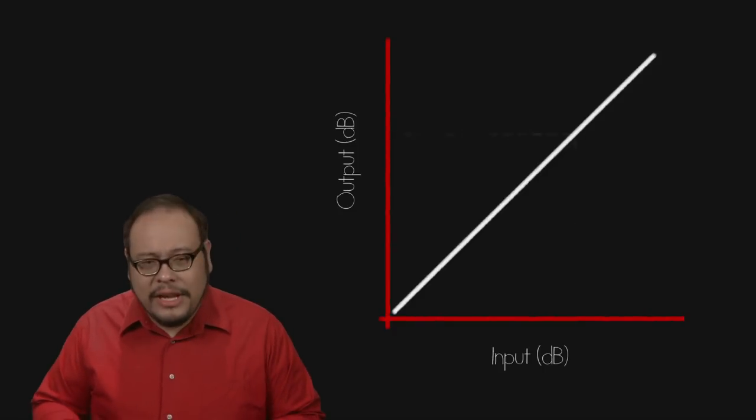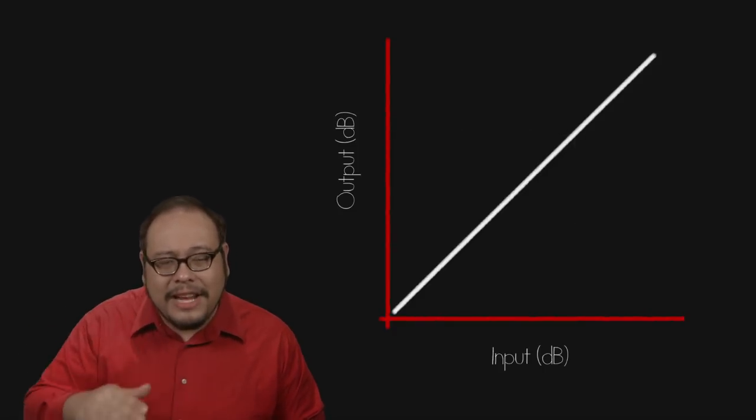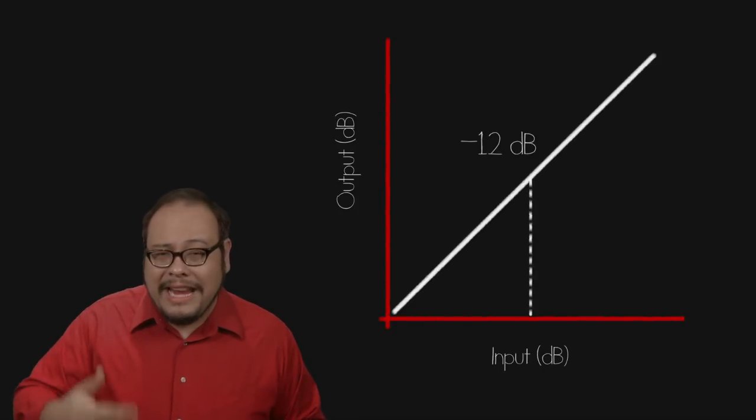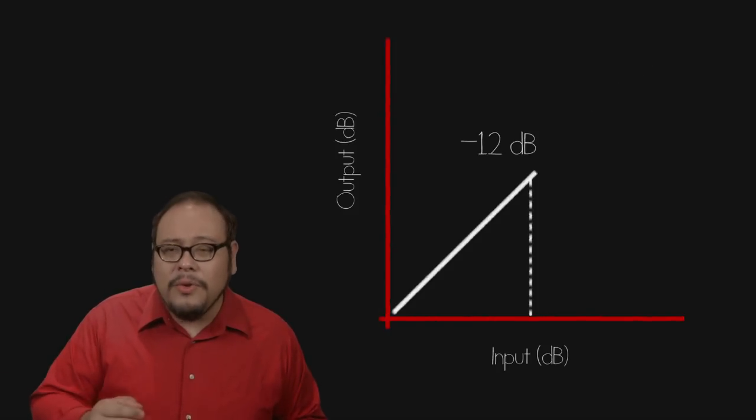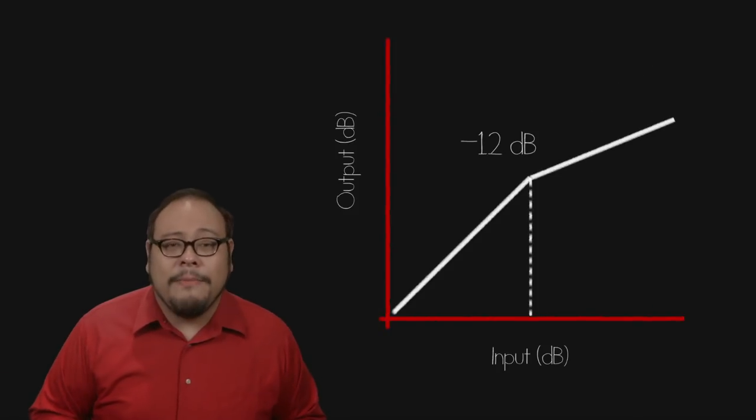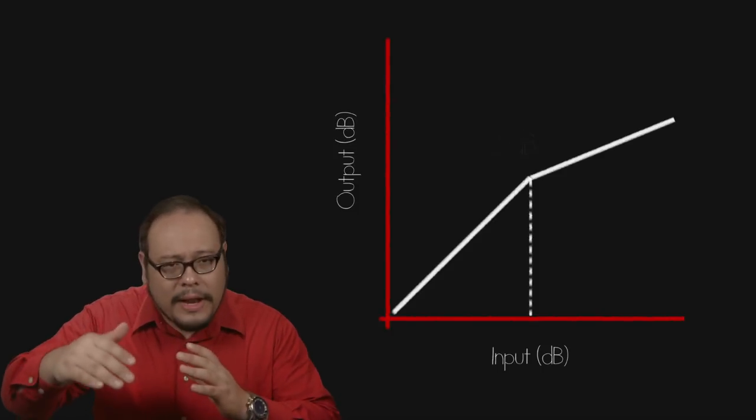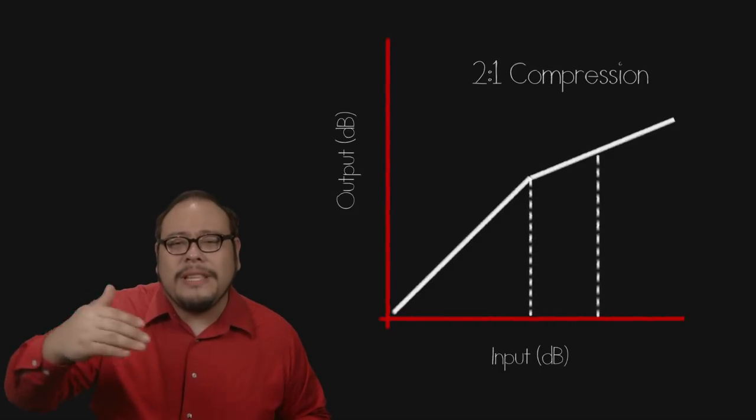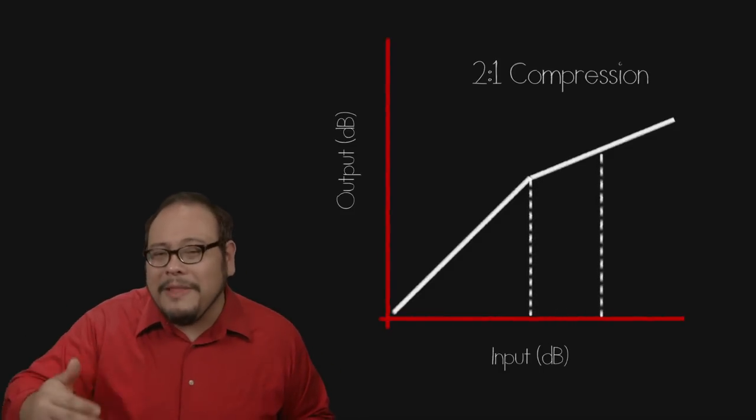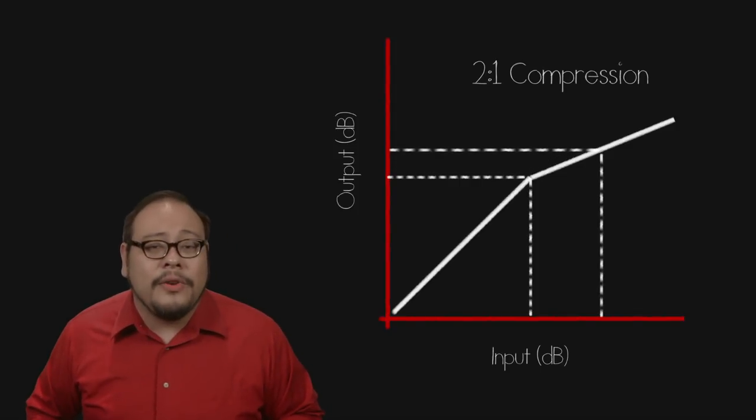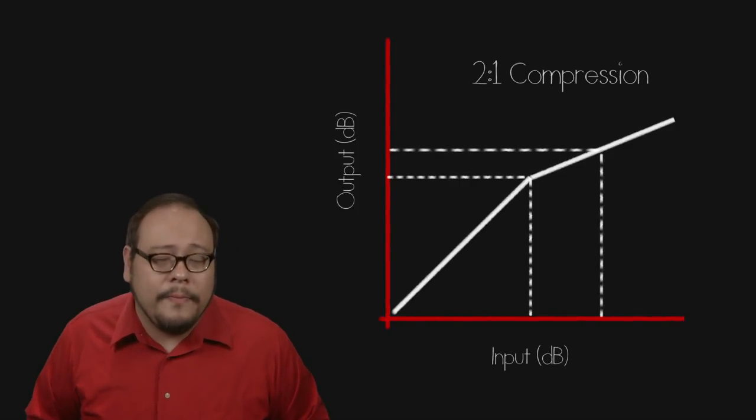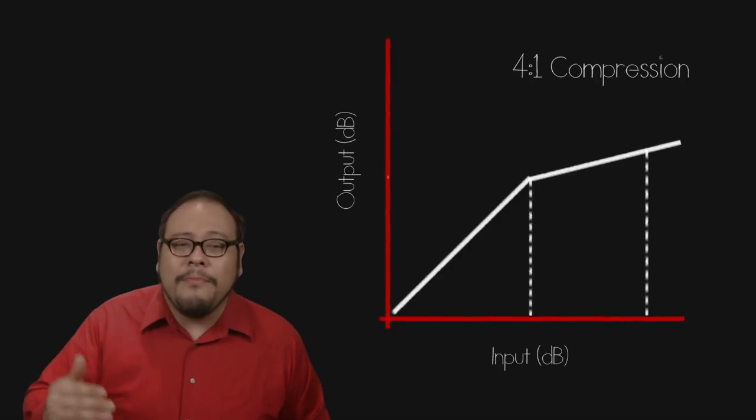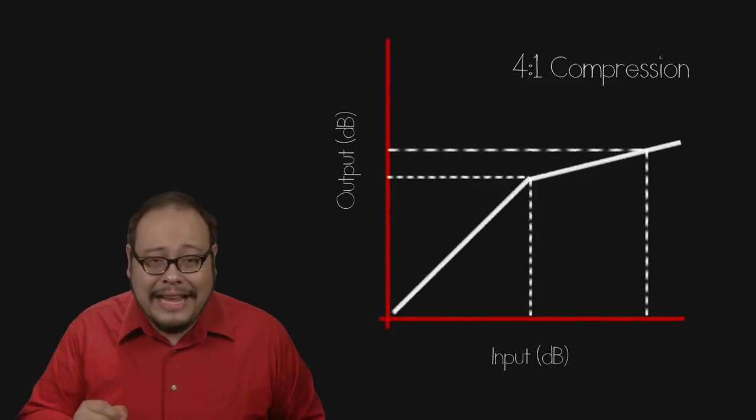A compressor works by essentially squashing down the sound that goes above a certain threshold. Let's say we want to dampen everything that goes above negative 12 dB. A compressor essentially draws a new line starting at negative 12 dB, this time with a slope of say 1 half or 2 to 1 compression. This means for every 2 decibel increase in volume above negative 12 dB from the input, there will only be 1 dB increase in the output volume. A more drastic compression will be 4 to 1. For each 4 decibel increase in the input, there will only be 1 decibel increase in the output.